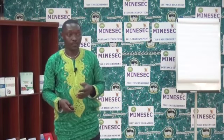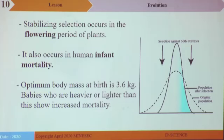Stabilizing selection is also common in human infant mortality rates. The optimum body mass at birth is 3.6 kilograms. Babies who are heavier or lighter than this show increased mortality. Lighter and heavier babies show higher rates of infant mortality, while babies whose weights are around the 3.6 kilogram range survive more. That type of selection is called stabilizing selection.